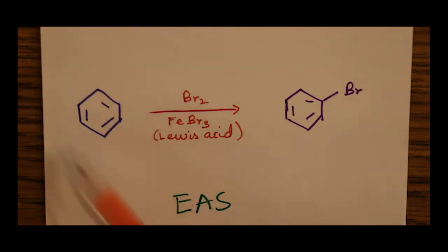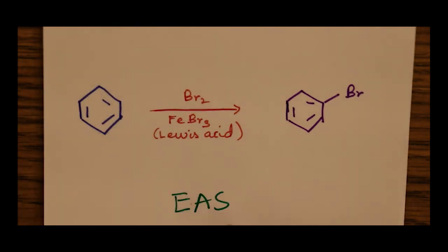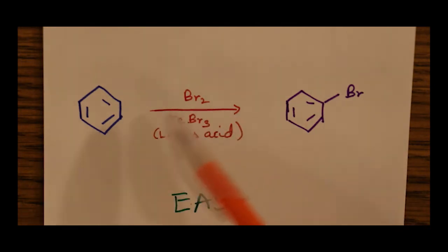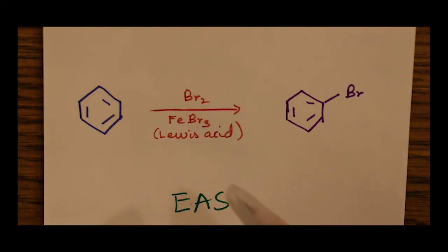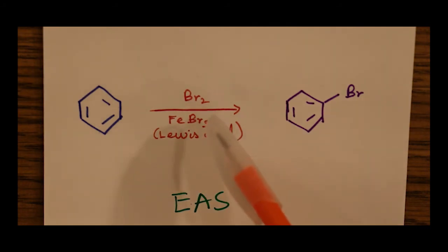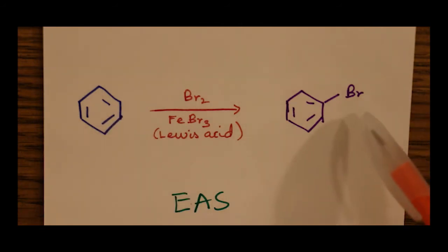Aromatic, because there's an aromatic ring involved. And substitution, because something is getting substituted for something else — in this case, a hydrogen for a bromine. This takes place in the presence of a Lewis acid, iron bromide, which is also an electron acceptor. It essentially splits off the Br2, and one of the Brs becomes slightly positively charged, or electron-deficient, or an electrophile. And that electrophile gets substituted on the ring to form the product.